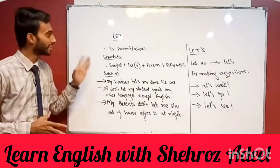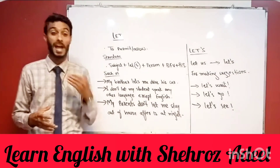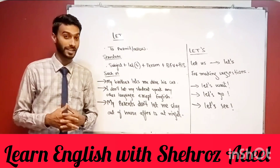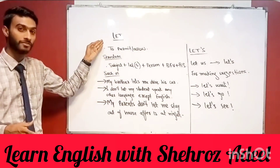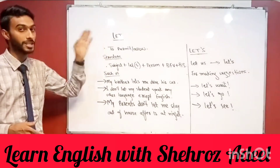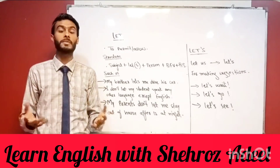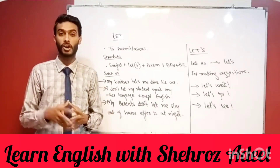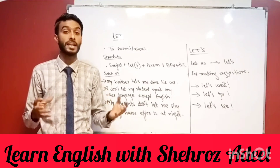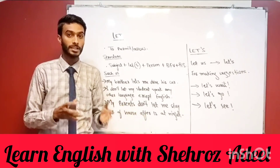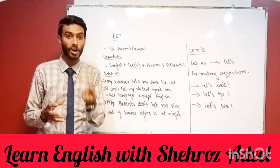Today's class is going to be more practical and more interesting. We are going to talk about 'let,' which is one of the causative verbs. The causative verbs are get, let, make, and have. They are called causative verbs and are used when something causes something else to happen.